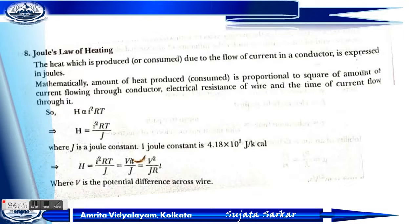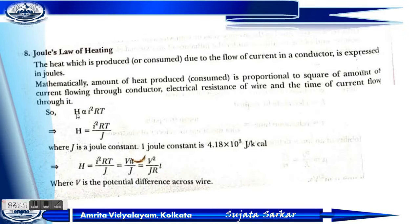This is Joule's law of heating. The heat produced due to the flow of current in a conductor is expressed in joules. The amount of heat is proportional to the square of the current flowing through it, proportional to the electrical resistance, and also proportional to the time of current flow. So H is proportional to I²RT, or H equals I²RT divided by J, where J is the joule constant, equal to 4.18 × 10³ joules per kilocalorie.